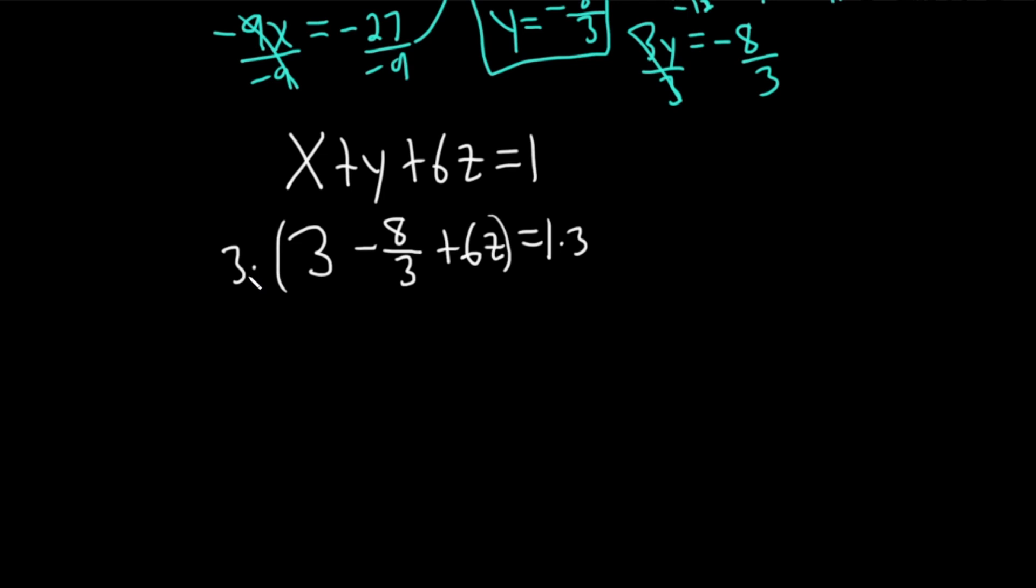I'll put a 3 here. 3 times 3 is 9, 3 times negative 8 thirds is negative 8, 3 times 6z is 18z. Just a cool trick to alleviate the fractional pain, so you don't have to do 3 minus 8 thirds and then divide a fraction by another number. Avoid the fractions altogether by multiplying everything by 3. So 3 times 3 is 9, 3 times negative 8 thirds is negative 8, 3 times 6 is 18, 3 times 1 is 3.